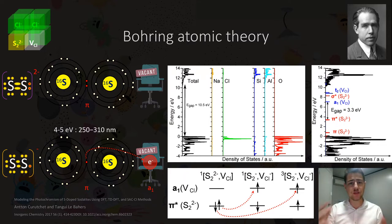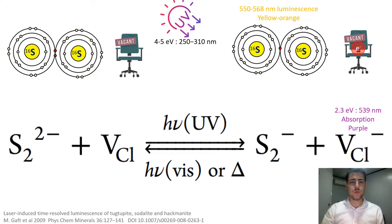With the energy provided by the UV radiation, around 4 to 5 electron volts, 250 to 310 nanometers, the charge transfer between S22- and the vacancy occurs, creating the f-center. Once the vacancy is populated with that electron, a geometrical relaxation of the system induces a large reorganization of the electronic states.